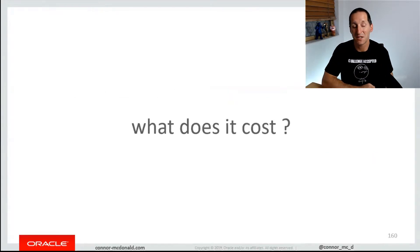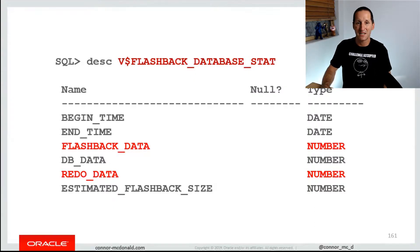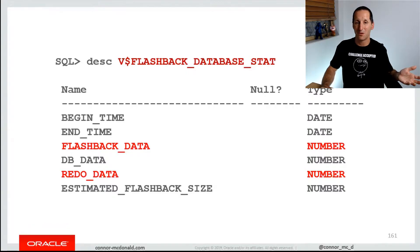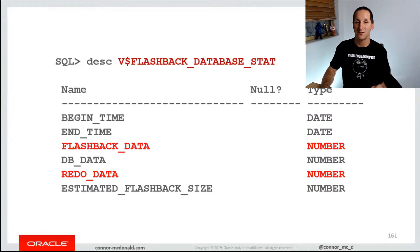The big question is: what does it cost in terms of resources? What are the overheads? You can get a nice, accurate measure of that using a thing called V$FLASHBACK_DATABASE_STAT. That's a facility that gives you, for a particular set of time intervals, how much flashback data you are consuming, how many logs you're writing, and you can compare it against the redo data.